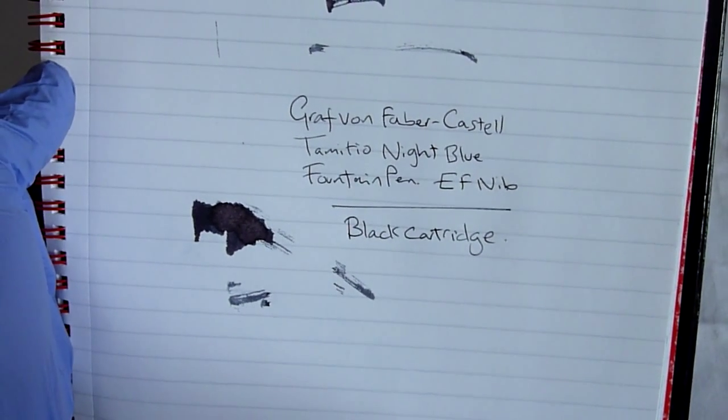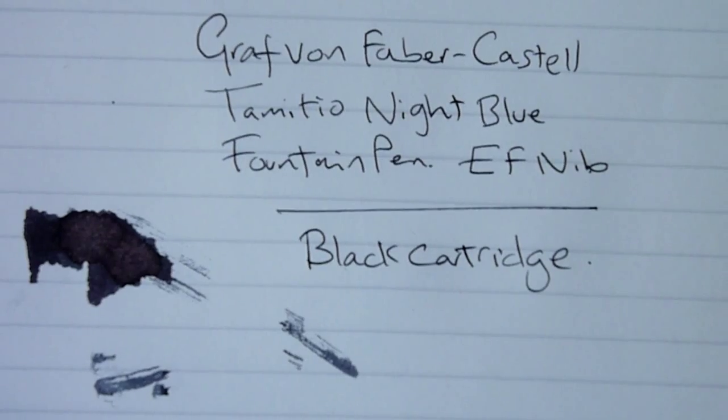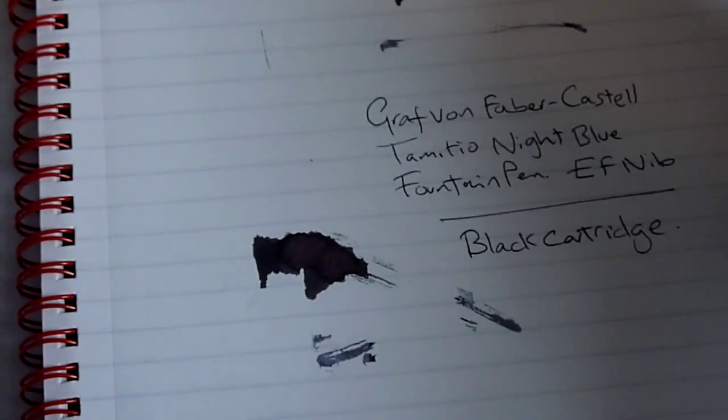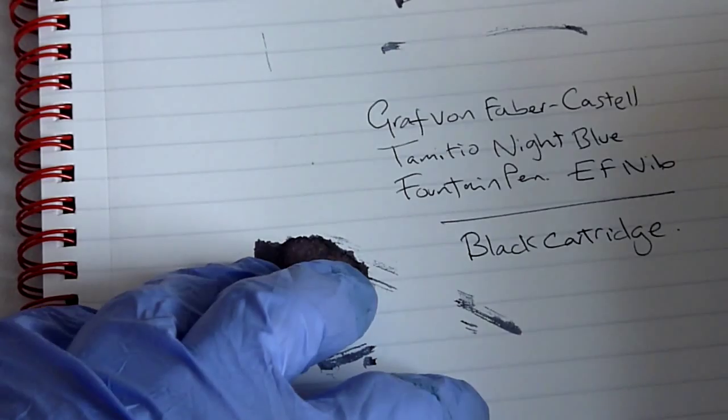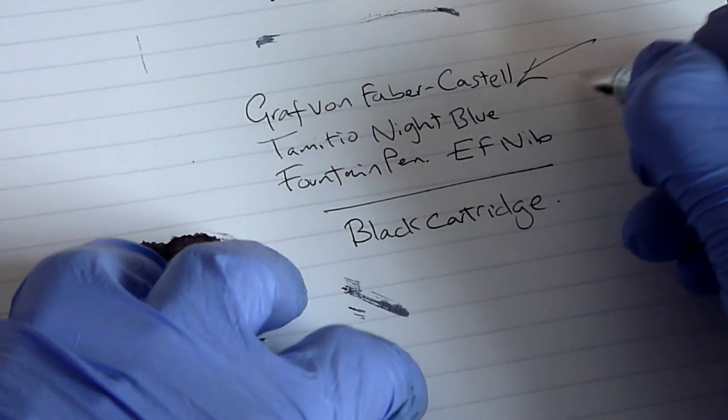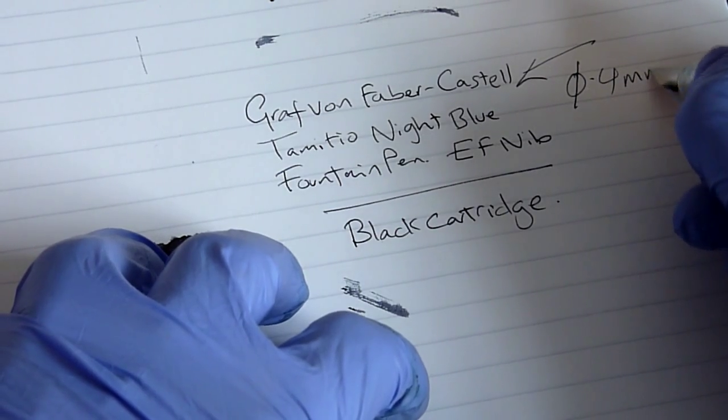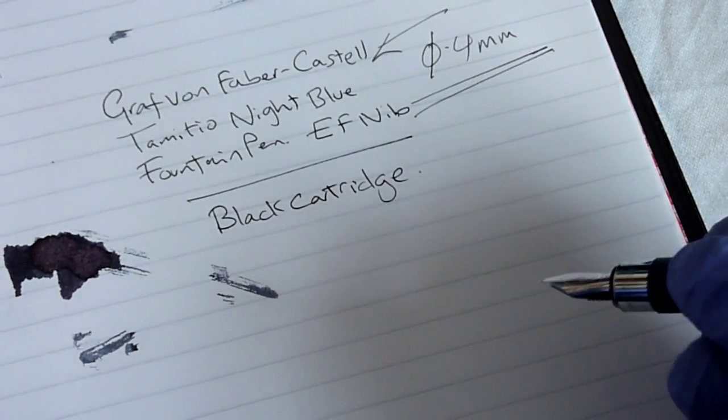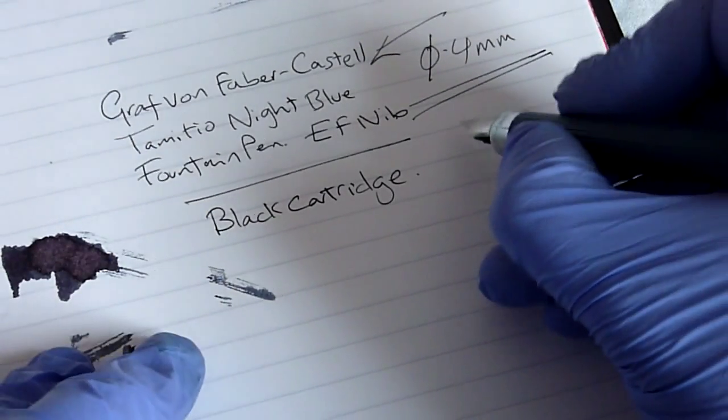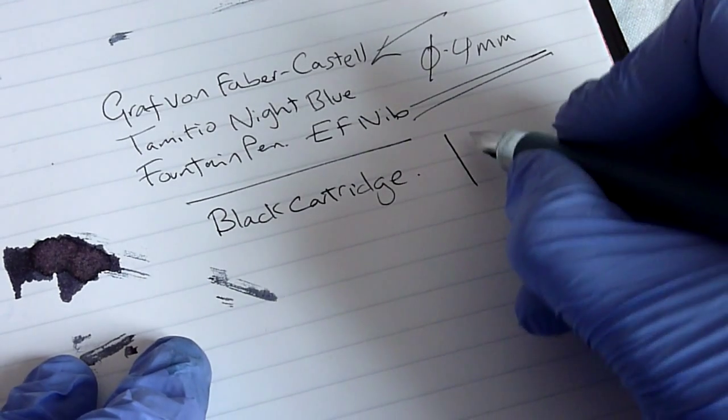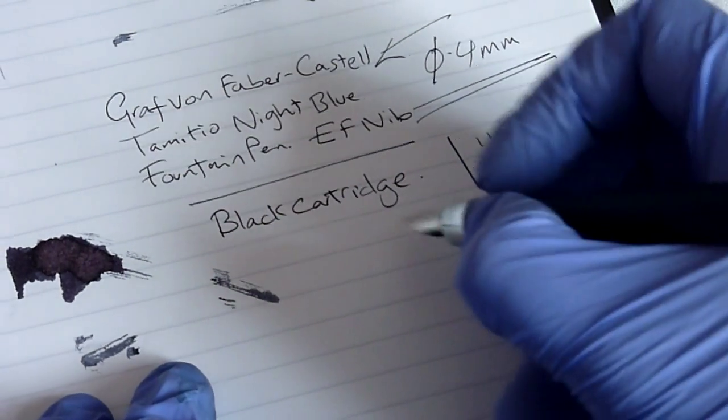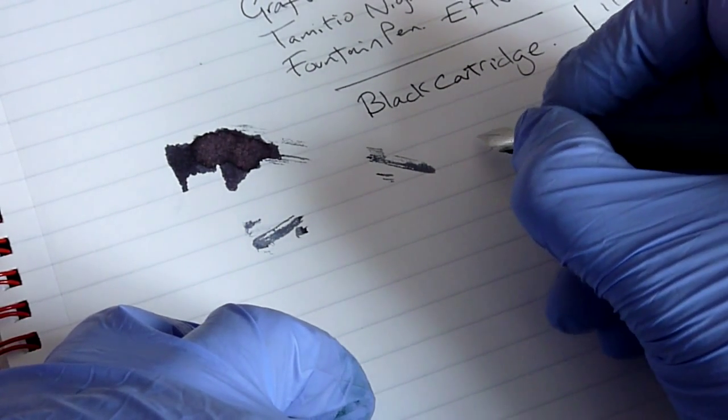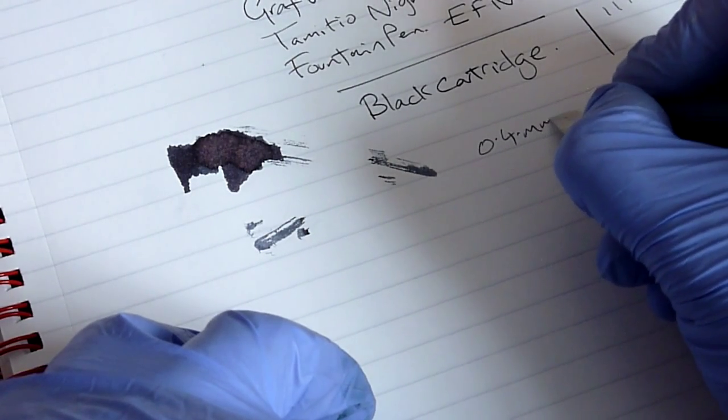So it does write, it writes quite nice actually so I'm actually pleased. For me I think in comparison to the Montblanc Extra Fine Nib this is pretty much the same, so I think it's 0.4 mm. It also depends, it's actually relative because it depends on how much pressure you actually put on because it can be a lot wider or a lot thinner. For me just the amount of pressure I put on onto the nib, for me the extra fine is pretty much always a 0.4 mm nib.